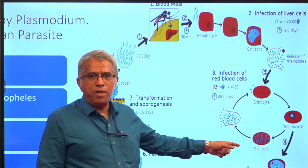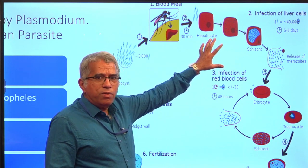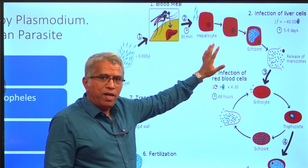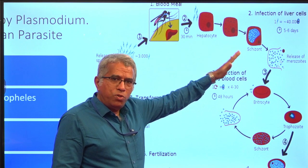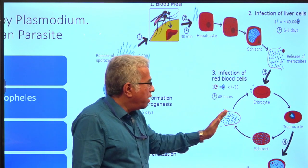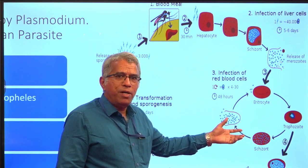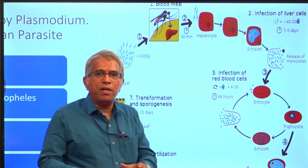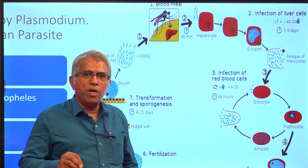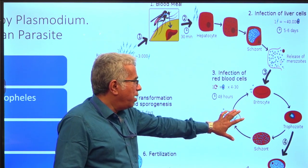In human RBC also, asexual reproduction takes place. In the liver there is one asexual reproduction cycle — that is schizogony, which is multiple fission. The same schizogony taking place inside the RBC is given another name: merogony. This is also schizogony but because it is taking place in the RBC it is called merogony.